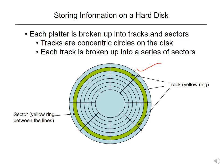Each platter is divided into tracks and sectors. The circles we see are called tracks, and each track is divided into sectors. This is the general structure of the hard disk — for example, this is one sector, this is another sector.